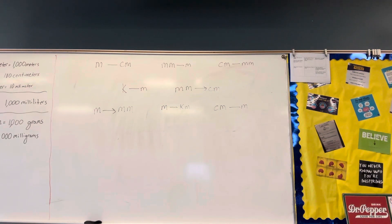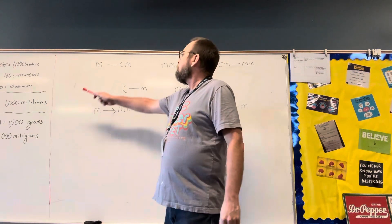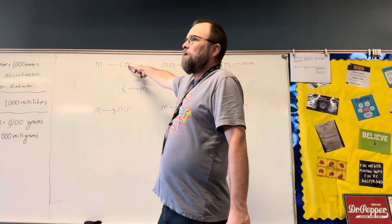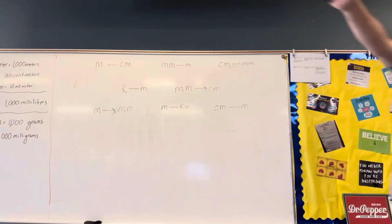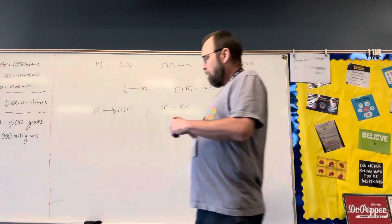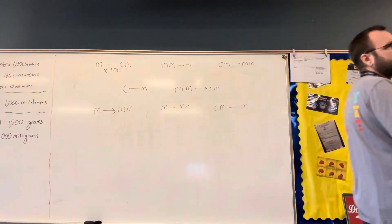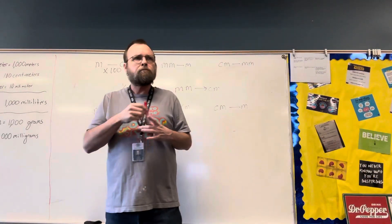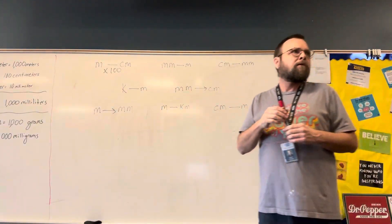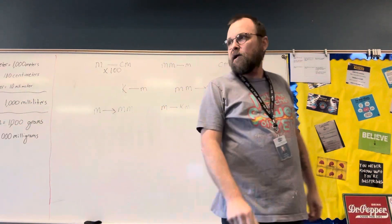This slide asks: what are the rules for converting these measures of length — metric units? If we are going from meters to centimeters, Victoria, are we going to multiply or divide? Multiply. Multiply by what? Multiply by 100. So that is what should be in that box. Why 100? Because meters are more — there are 100 centimeters in one meter.